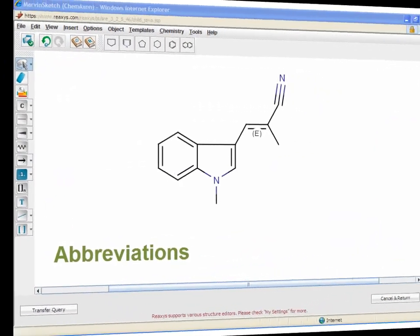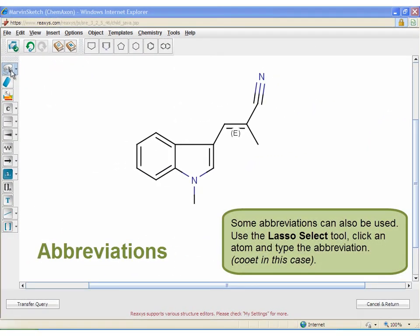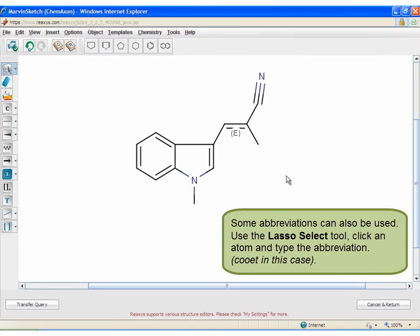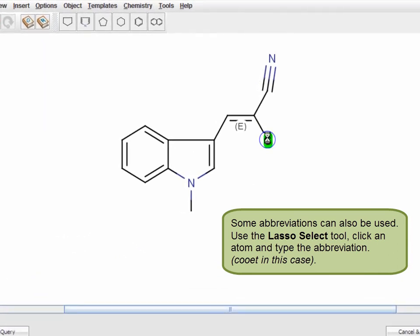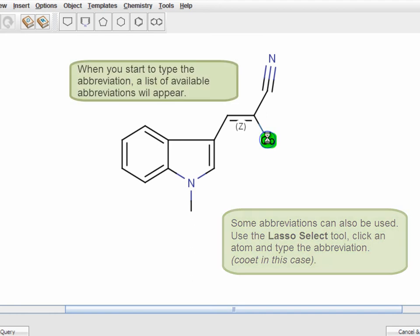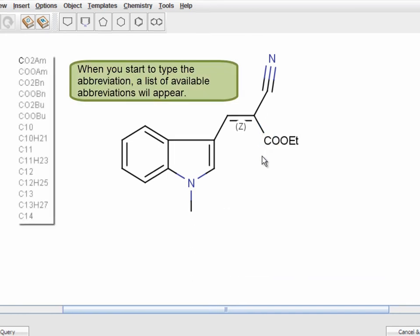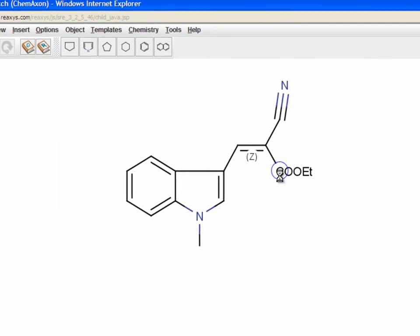Abbreviations. Some abbreviations can also be used. Use the Lasso Select tool, click an atom, and type the abbreviation. Here I am typing C-O-O-E-T for Ethyl Ester. When you start to type the abbreviation, a list of available abbreviations will appear.